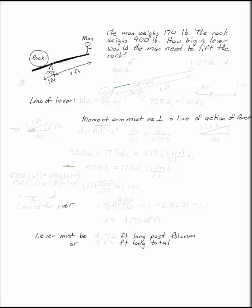Now, first thing you want to do is draw a free body diagram. Here's my lever. I've got a 900 pound load over here that's in the vertical direction. And 170 pounds over here.